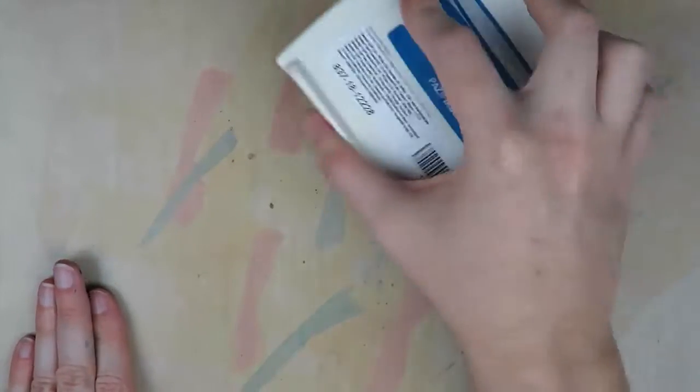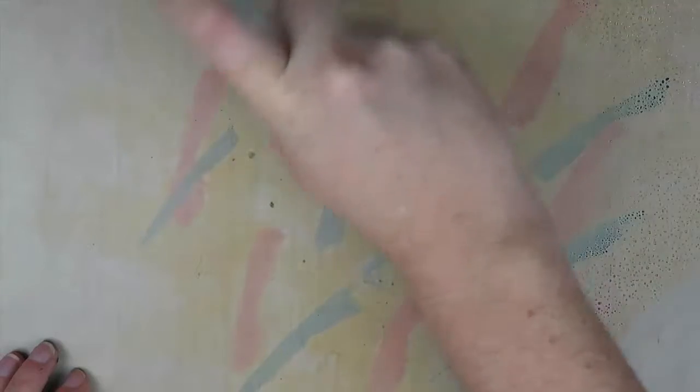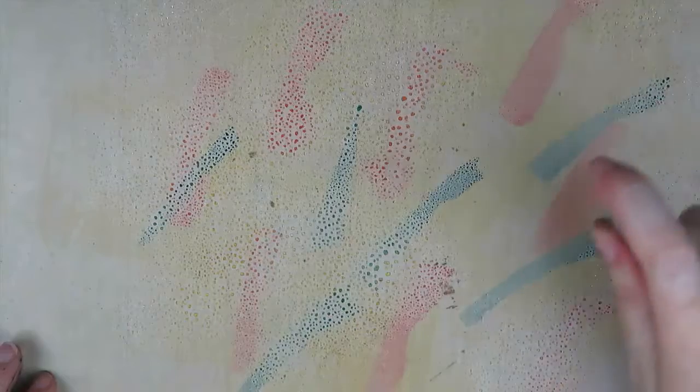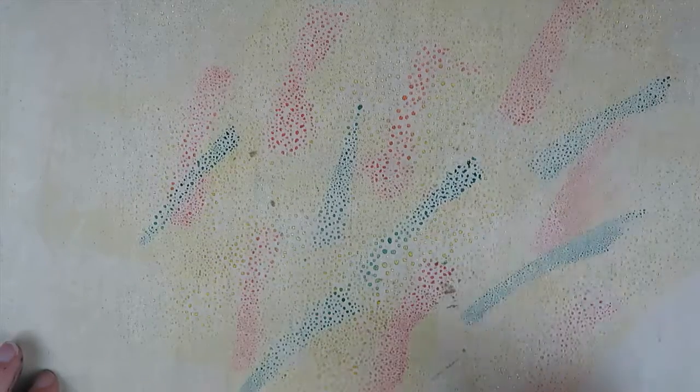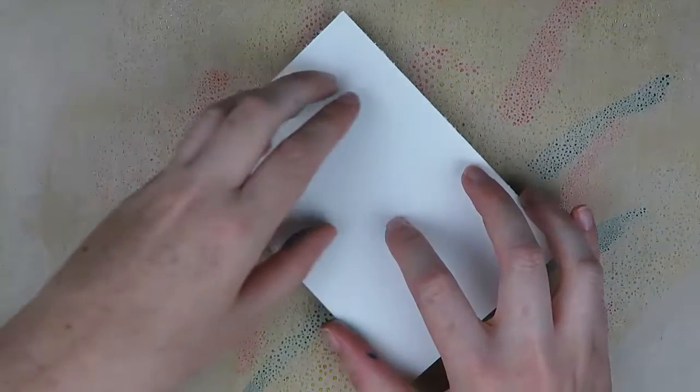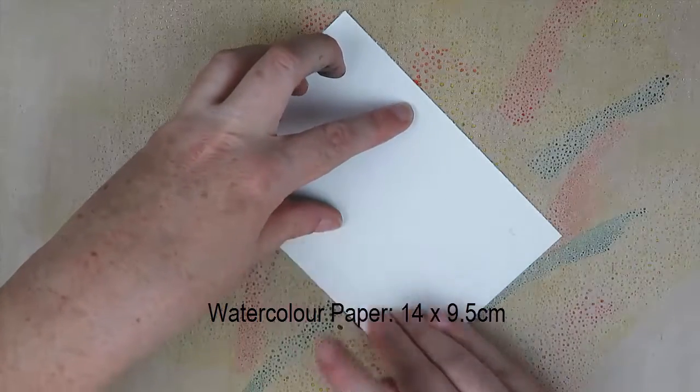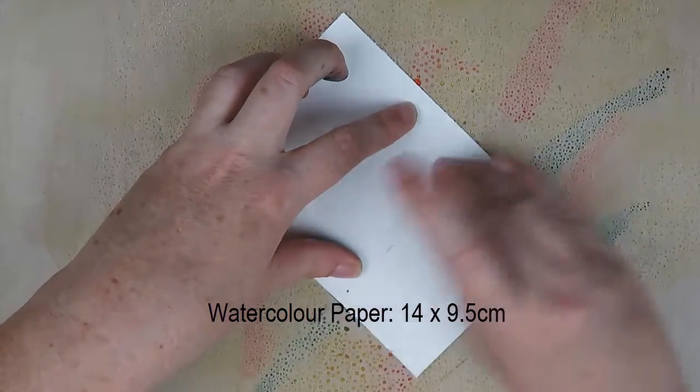And then I'm going to come in with my spritzer. This just has water in it and I'm just going to spritz that together. And then I've got my piece of watercolor paper and this piece here measures 14 by 9.5 centimeters. I'm just going to apply this directly on top of that pool of color that we have just created.